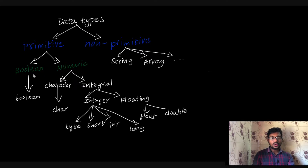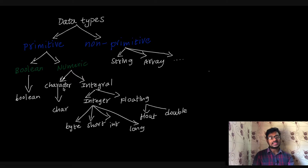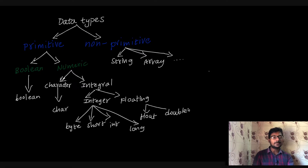If you have a boolean category, it is a boolean type. If you have a numeric category, you have a character and an integral. These are the actual data types at the leaf level: boolean, char, byte, short, int, long, float, and double. These are the actual primitive data types available in Java.